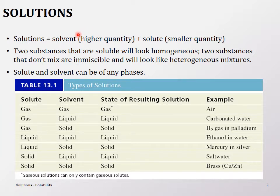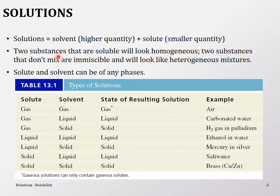The solute is in a smaller quantity and the solvent is in a higher quantity — it's all about quantities. When the solute and solvent are completely soluble, you get a homogeneous solution. If they are not completely miscible, they form a heterogeneous mixture where you can tell two different substances are present. In homogeneous solutions, analysis is needed to confirm you have a solution.